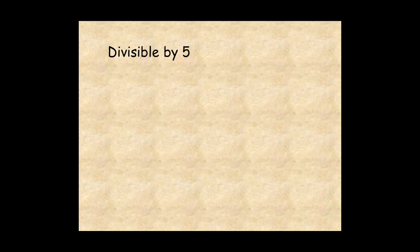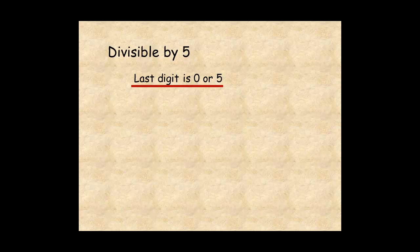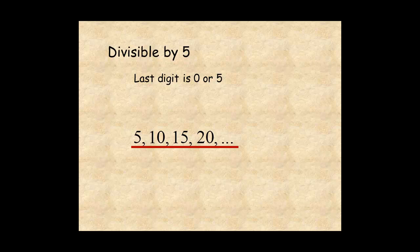A number is divisible by 5 if the last digit of the number is 0 or 5. You probably know this one already. If you count by 5s, you can see 5, 10, 15, 20 are all multiples of 5, so they're divisible by 5.